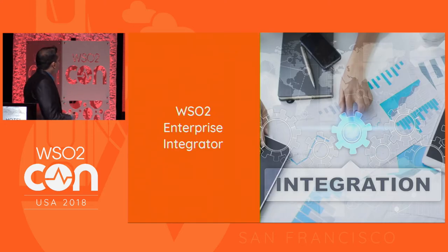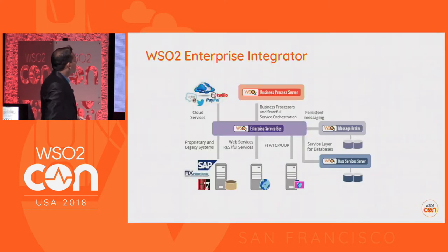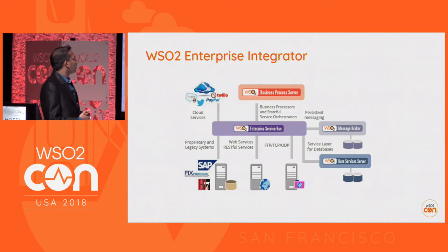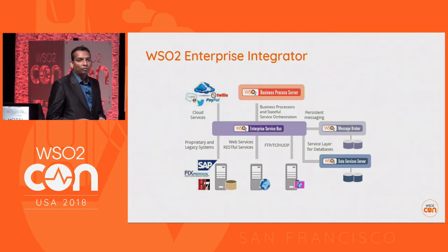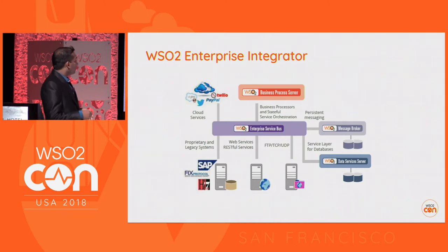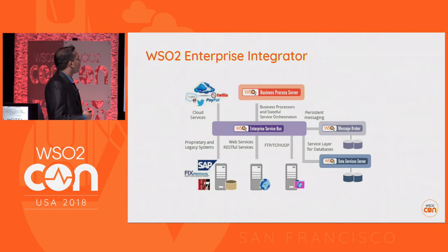Now let's look at the WSO2 Enterprise Integrator product. Before last year, our integration platform consisted of a set of different servers. We had the Enterprise Service Bus as the central hub for all kinds of integration, Message Broker as the messaging middleware, and Data Services Server for data integration, along with other servers.